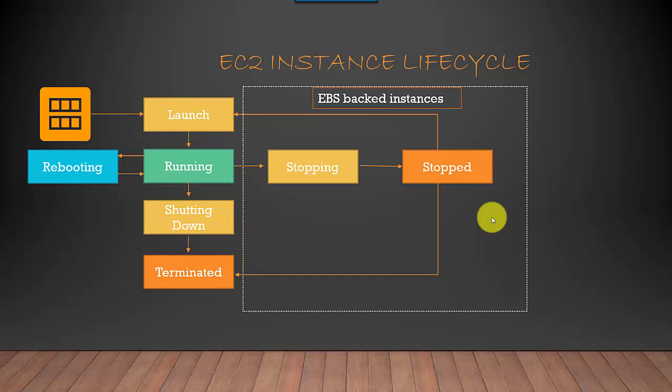From the launch state, the instance comes into the running state where you have an IP and can connect to your machine. This is also where AWS will start billing you — for the partial hour or full hours you've been using it. Even if your machine is idle, as long as it's in the running state you will receive a bill, so make sure you don't leave your instance running if you're not using it.